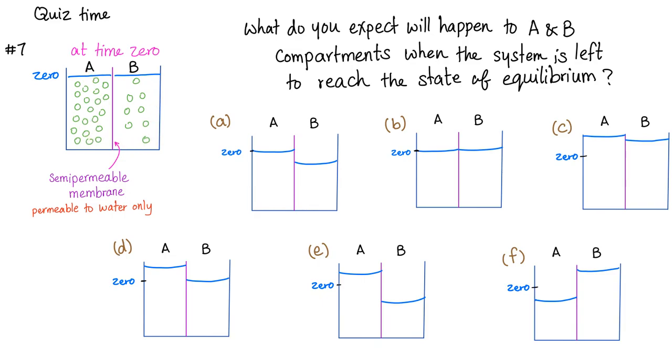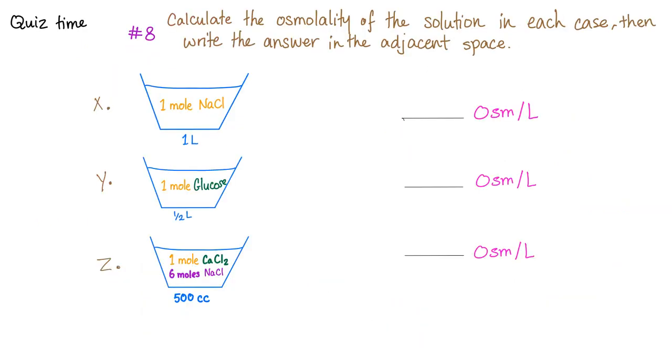What do you expect will happen to A and B compartments when the system is left to reach equilibrium? So, first, we started at zero level. We added water first, then we added more solute in A than B. This is time zero. When you leave the system to reach equilibrium, which one is going to be? Then, second question. Calculate the osmolality of the solution in each case, then write the answer in the adjacent space. This is not a multiple choice question, kiddos. And this is question eight. To get all the previous questions, go to my previous videos in this playlist.